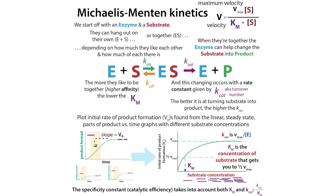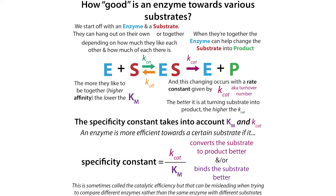You can get the Kcat by dividing the maximal velocity by the concentration of enzyme used in your assay. Sometimes you also see the specificity constant, which is the Kcat over the Km — sometimes called catalytic efficiency, but this can be misleading. It can be used to compare the same enzyme with different substrates to see which ones it prefers, but it can be misleading if you're trying to compare different enzymes.